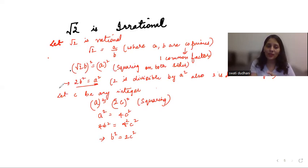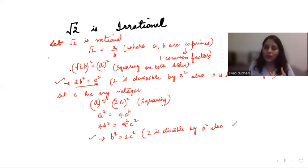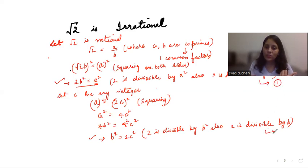From b² = 2c², we can see that 2 is divisible by b², and therefore 2 is also divisible by b — again using Theorem 1.3.